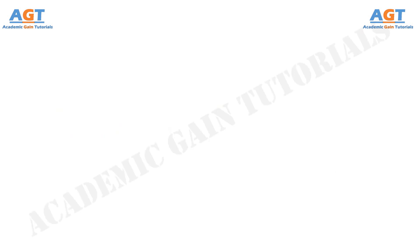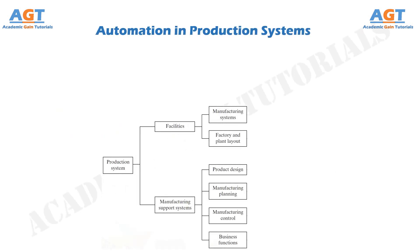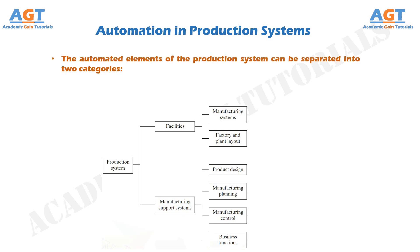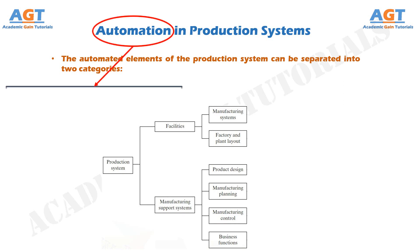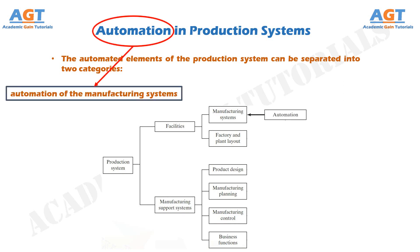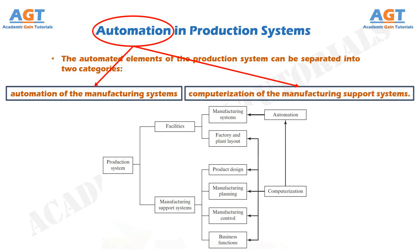Automation in Production Systems. Some components of the firm's production system are likely to be automated, whereas others will be operated manually. The automated elements can be separated into two categories: one, automation of the manufacturing systems in the factory, and two, computerization of the manufacturing support systems. In modern production systems, the two categories are closely related, because automated manufacturing systems are usually implemented by computer systems integrated with manufacturing support systems and management information systems at plant and enterprise levels. The two categories are shown in this figure.